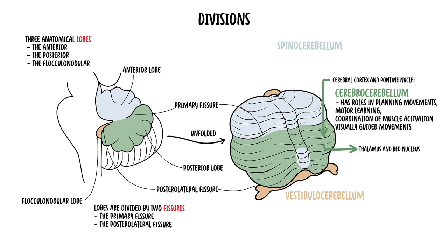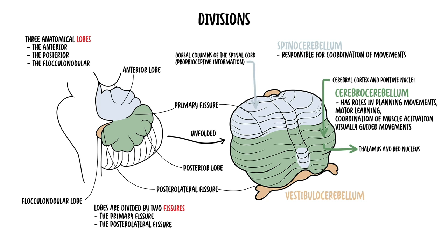The next area, the spinocerebellum, is made up of the vermis and the intermediate zone of the cerebellar hemispheres. The spinocerebellum receives proprioceptive information from the dorsal columns of the spinal cord, and this is responsible for coordination of movements.